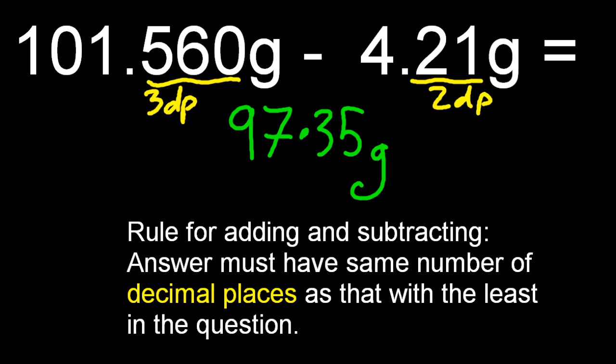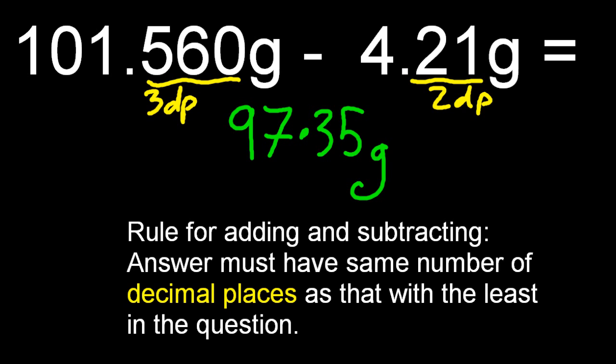Different rules for multiplication and division though. The rules for multiplication and division are the answer must have the same number of significant figures as that with the least in the question.